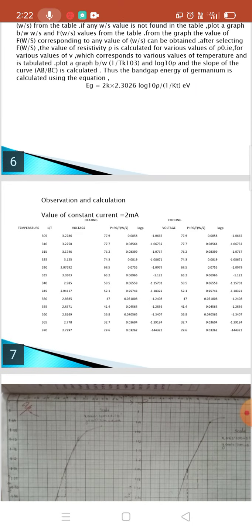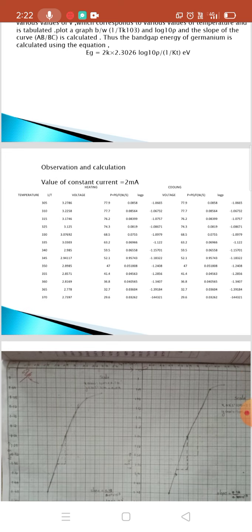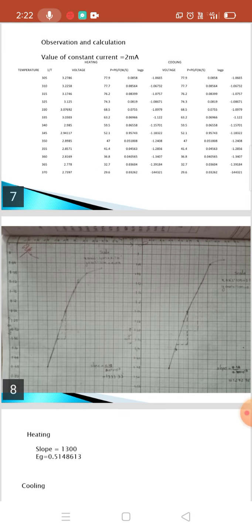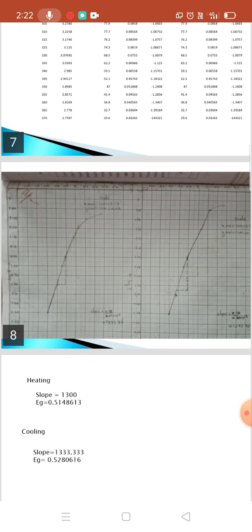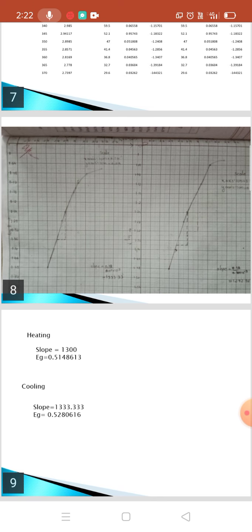Observation and calculation: the table below shows the values of temperature, voltage, and log rho for heating and cooling. When the graph is drawn using 1 by KT and log rho, the output for heating and for cooling, and the value for Eg is obtained for heating and cooling. For heating it is 0.514 and for cooling it is 0.5280. Thank you.